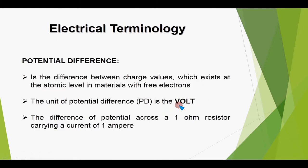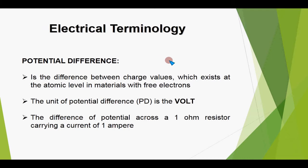First, what is potential difference? Potential difference is the difference between charge values which exist at the atomic level in materials with free electrons. At one terminal some charge would exist, and at the other terminal a different value of charge would exist — that difference is called the potential difference. The unit of potential difference is the volt, which is the difference of potential across a one-ohm resistor carrying a current of one ampere.